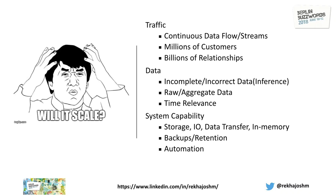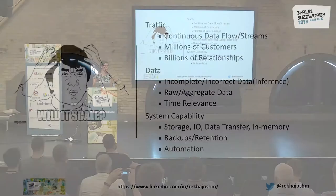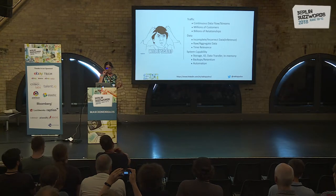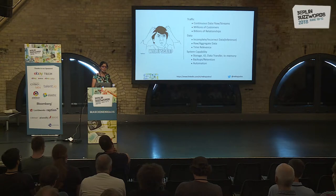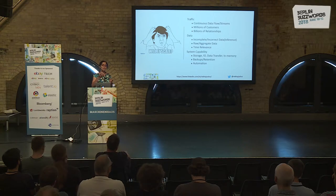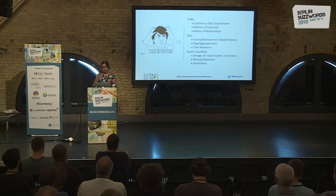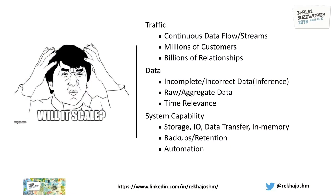Now talking about graphs at scale: in many of the companies I have worked with, scale is one of the primary concerns. There are millions of customers, billions of data points. The traffic is very, very huge, and you have trillions of records to manage. There is incomplete data sometimes and sometimes incorrect data — how to not let that cause issues, but to actually plan for it, and then handle it. When you talk about scale, you are thinking about all these layers.